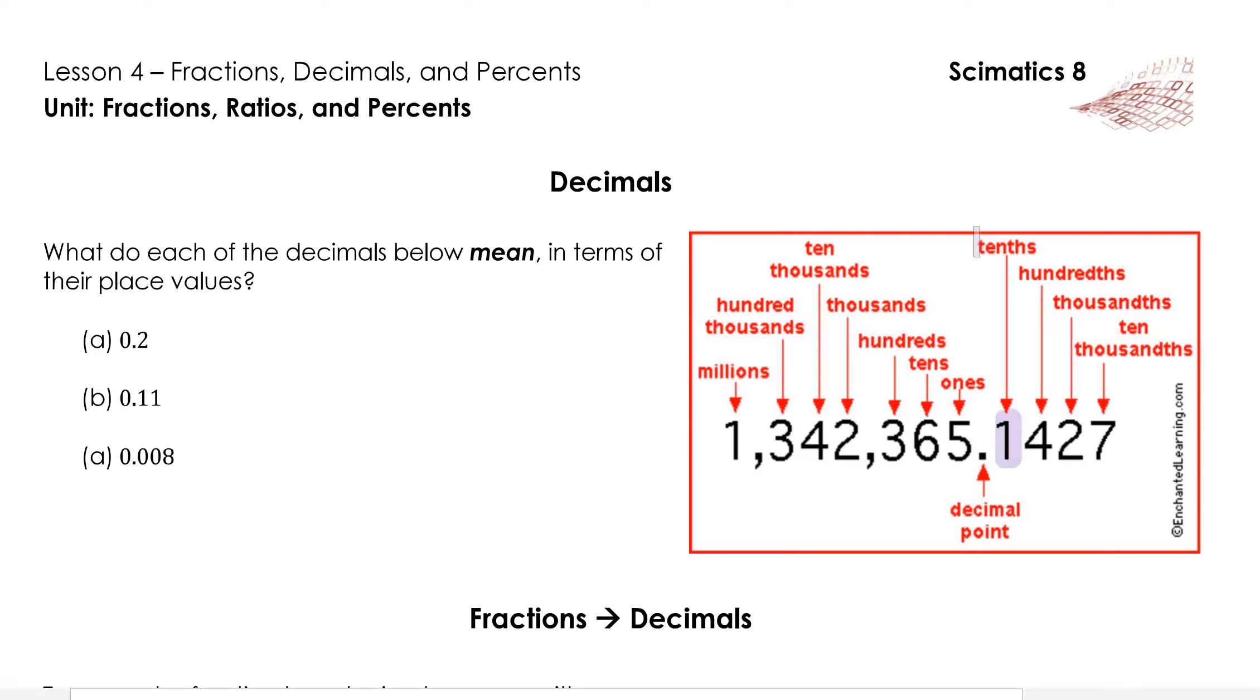The first number after the decimal point is how many tenths you have, the second is how many hundredths, and the third is how many thousandths, and so on. So if we had 0.2 for example, the 2 is in the tenths position, so this must mean 2 tenths. 0.11 goes as far as the hundredths position, so this must be 11 hundredths. And 0.008 goes as far as the thousandths position, so this must be 8 thousandths.